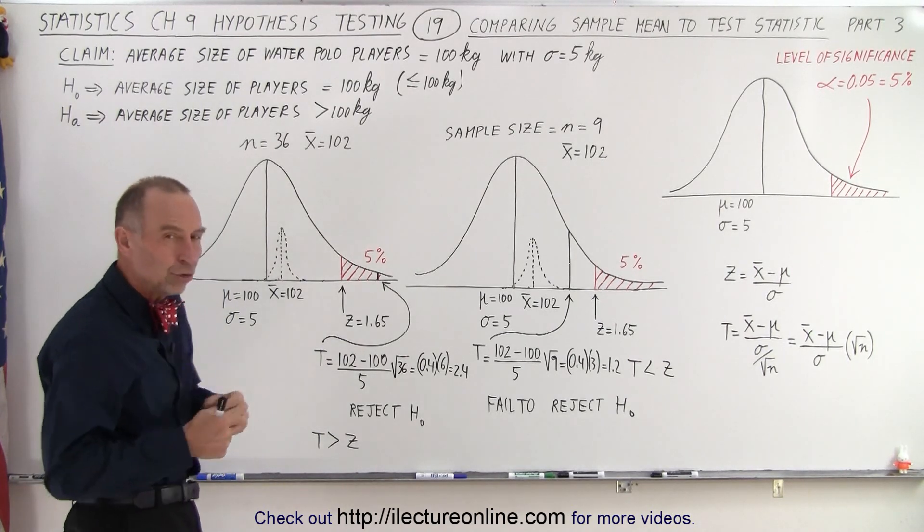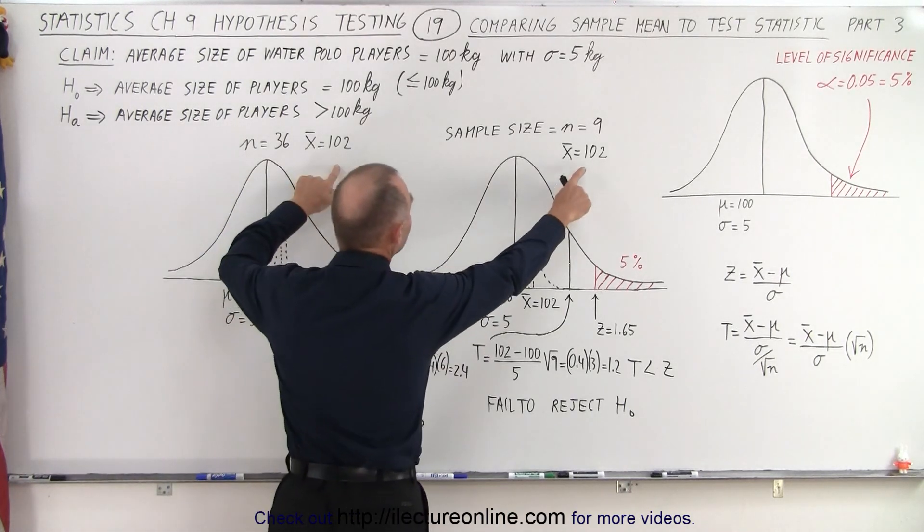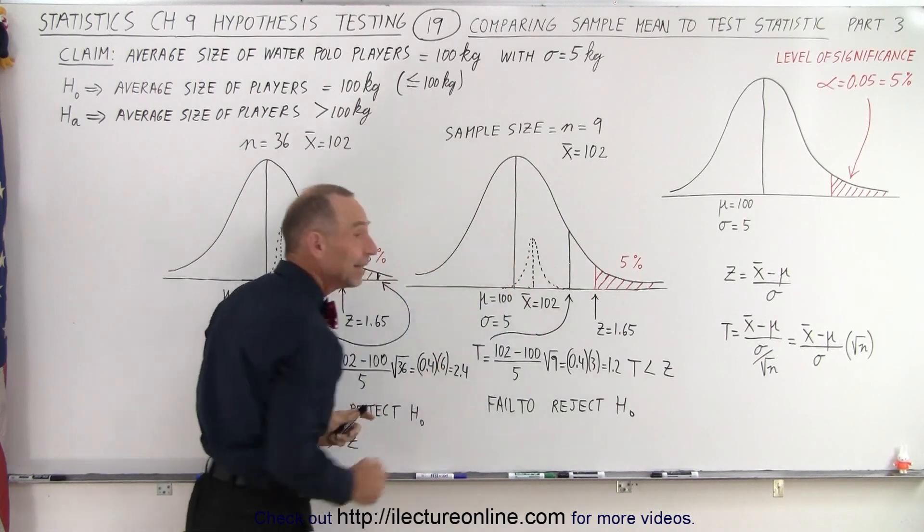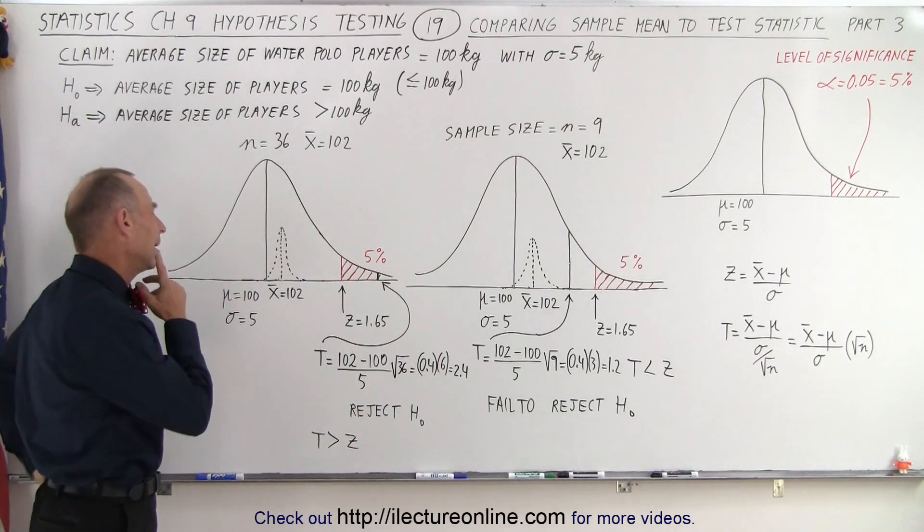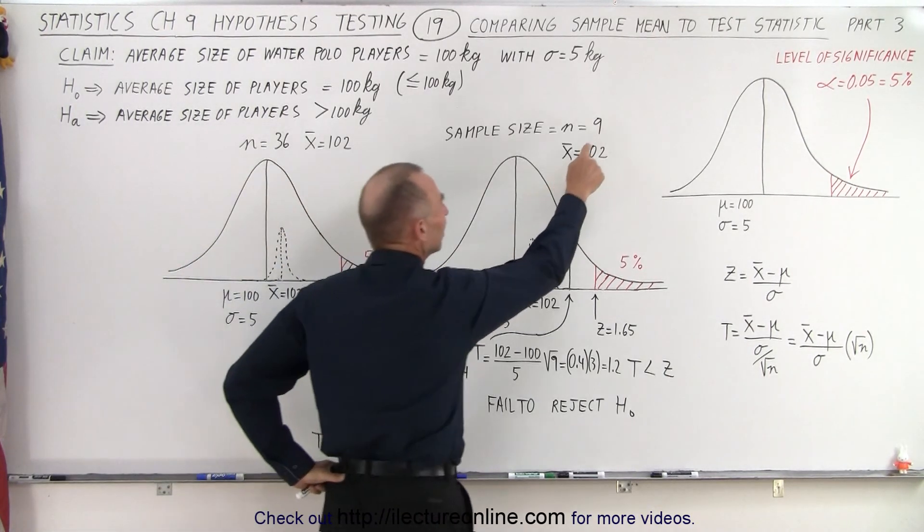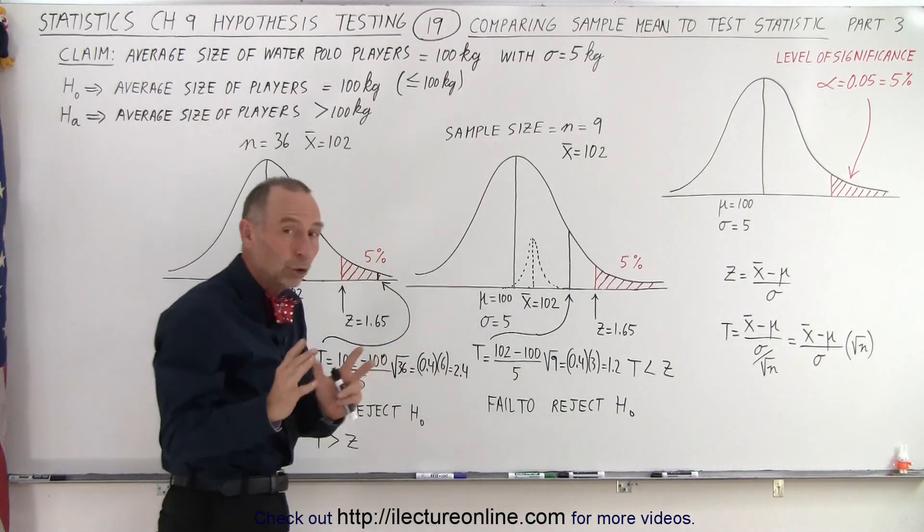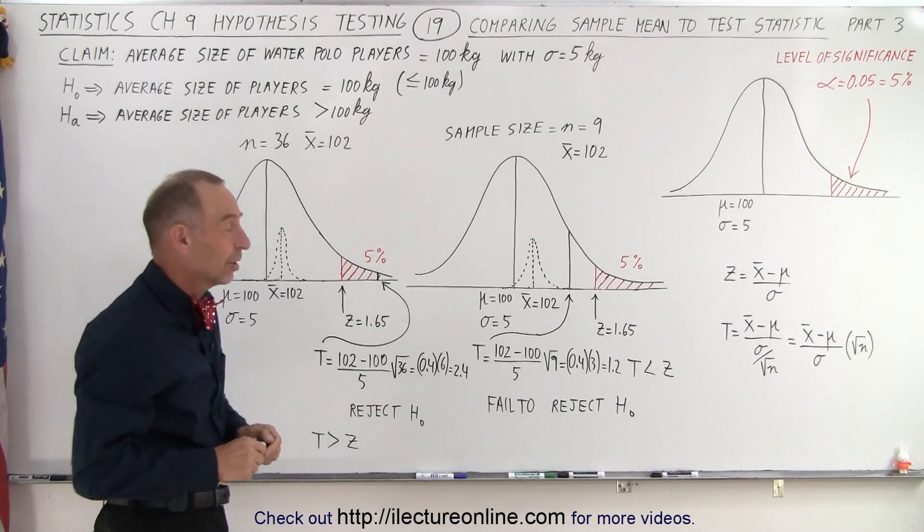But now let's take two more samples and in this case each of the samples indicate that the average of the sample is 102 kilograms, which means it's not that much different than the average of the general population, at least the one that was assumed. So now is a sample size of 9 sufficiently large with a smaller mean, closer to the mean of the population, to reject or not reject the null hypothesis?